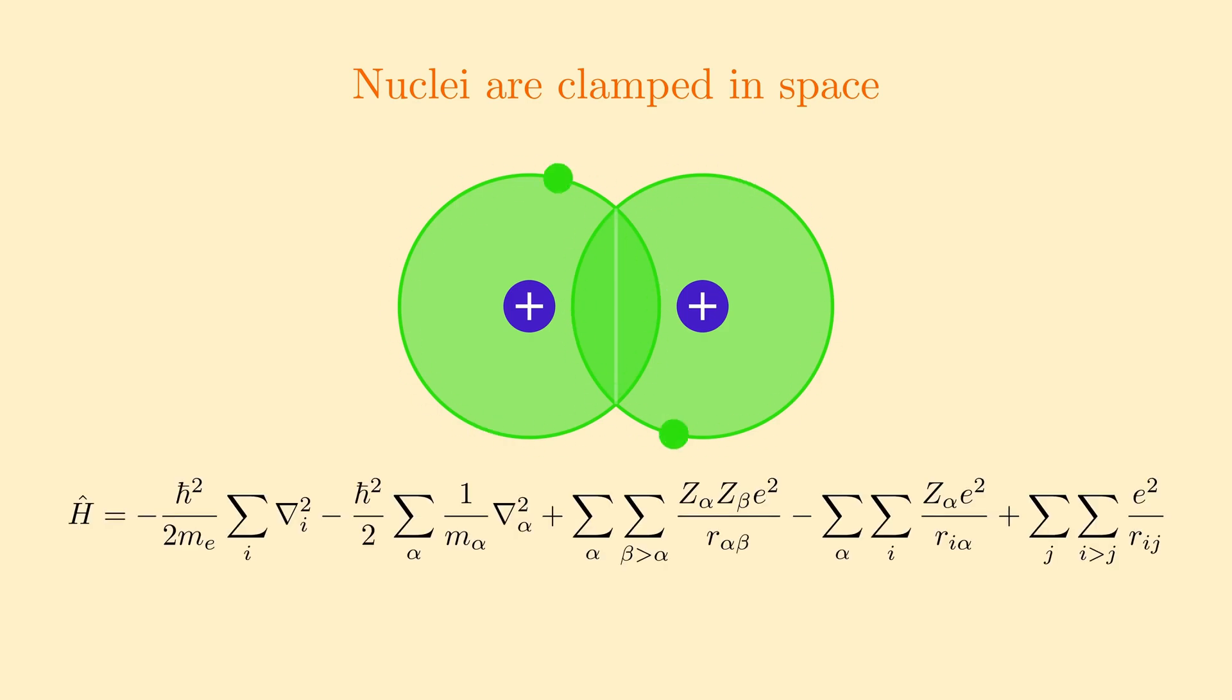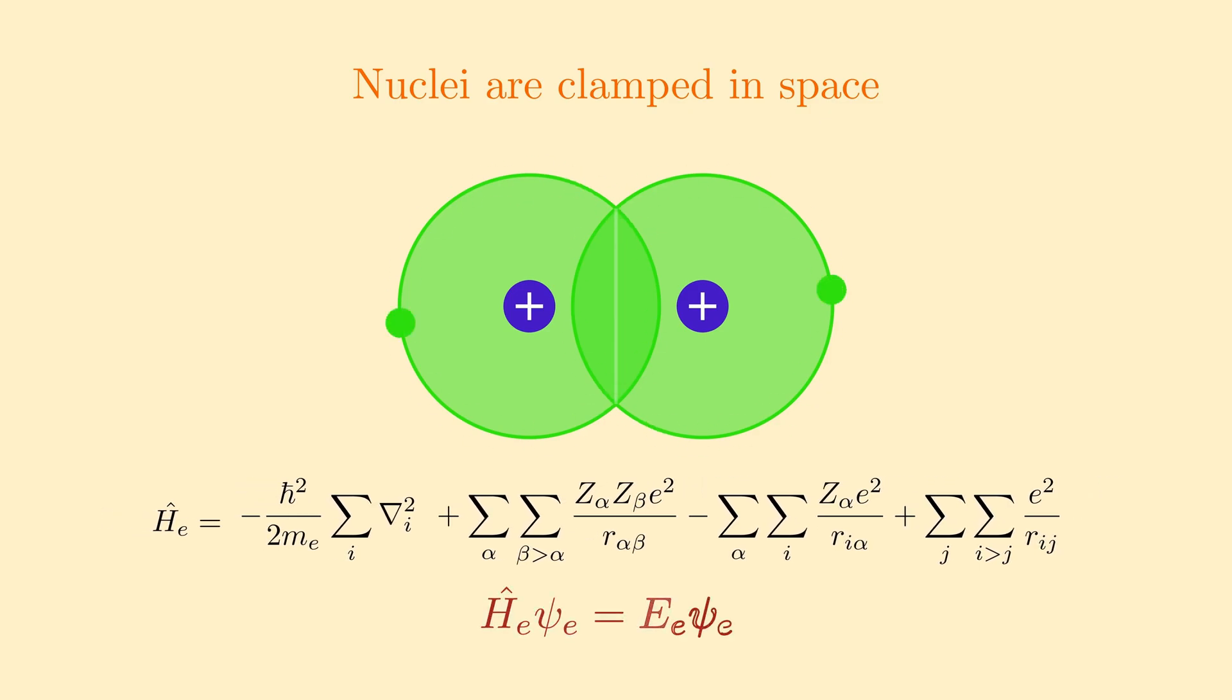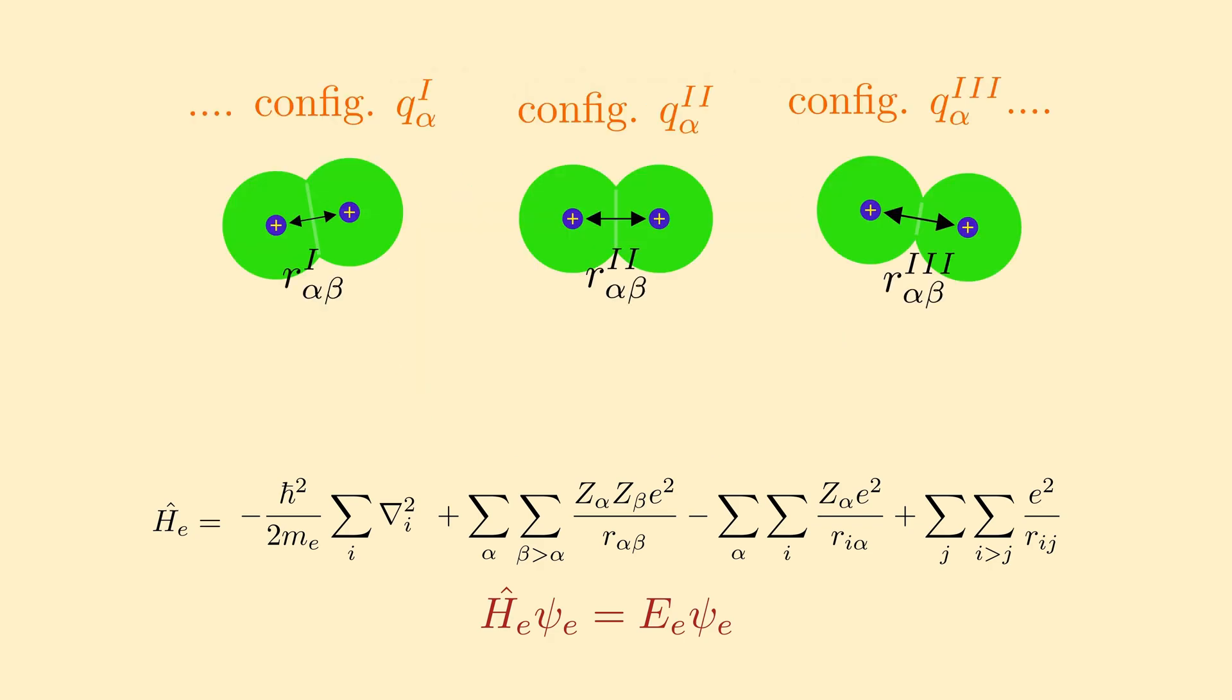Hence, in the first step of the Born-Oppenheimer approximation, the nuclear kinetic energy terms can be omitted from the molecular Hamiltonian to obtain the Schrodinger equations for the electronic motion. The inter-nuclear distance R alpha-beta appearing in the Hamiltonian are not variables, but are each fixed at some constant value depending on the nuclear configuration, i.e., the positions of the nuclei. There are an infinite number of possible nuclear configurations, and for each of these, we can solve the electronic Schrodinger equation to get a set of electronic wave functions and energies.